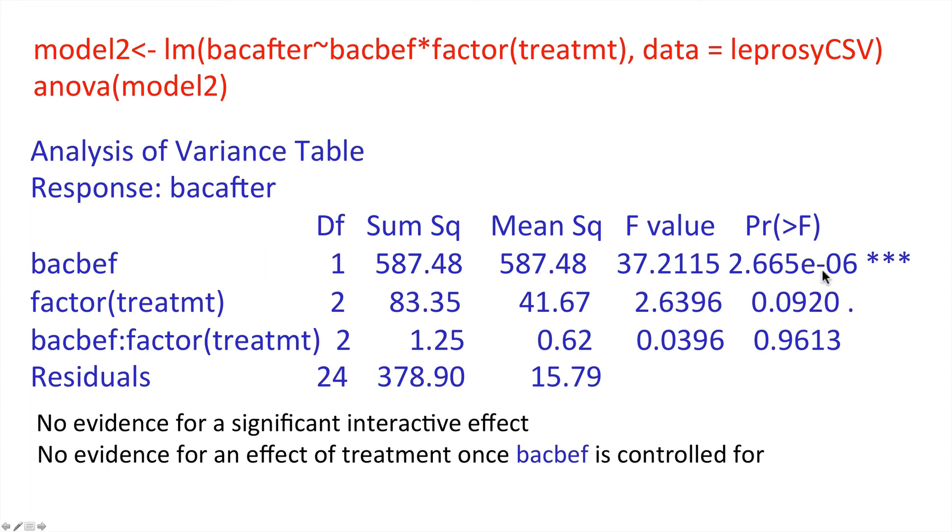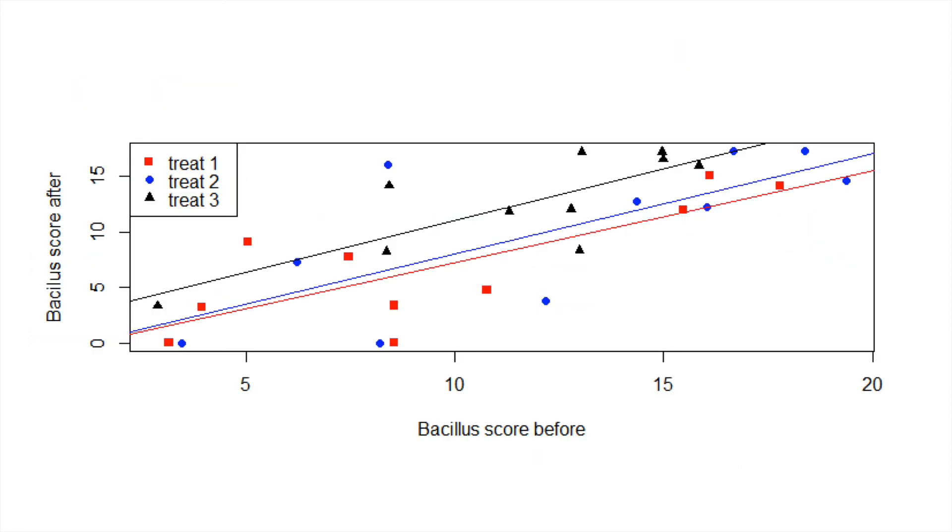You'll notice in a type 1 we're controlling for things above it in the list. And here there is no effect of that treatment just as before when we control for back before. And yet there remains a very strong effect of back before on back after. And the overall fitted model actually looks like this. And we'll see how to fit such graphs in the practice and web parts of this particular application.